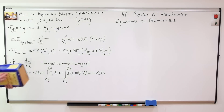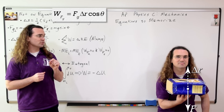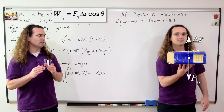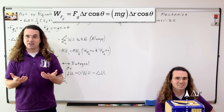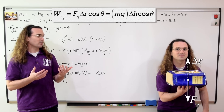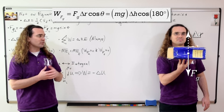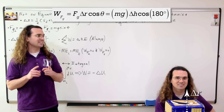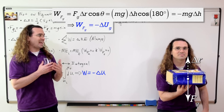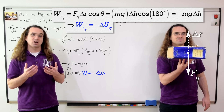For example, as I raise this book, the work done by the force of gravity is equal to the force of gravity times the displacement of the book times the cosine of the angle between those two vectors. The force of gravity equals mass times the acceleration due to gravity. The displacement is equal to the change in height of the book, and the angle between the force of gravity and the displacement of the book is 180 degrees, the cosine of which is negative one. In other words, the work done by the force of gravity as I raise this book equals the negative of the change in gravitational potential energy of the book.